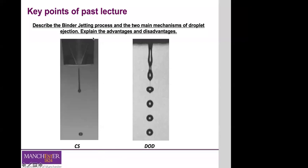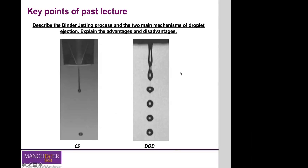You can either have a continuous stream, or — and this is probably the most common commercial system used nowadays — drop on demand. In the continuous stream case, a jet of binder material is ejected from the nozzle continuously. In drop on demand, single droplets are ejected directly from the nozzle. Continuous stream allows a higher production rate, but the resolution and accuracy are inferior compared to drop on demand, which is why drop on demand systems are more common in commercial inkjet printers today.